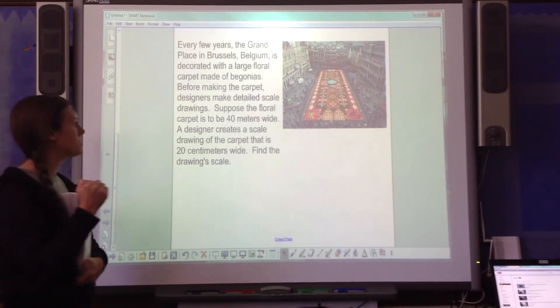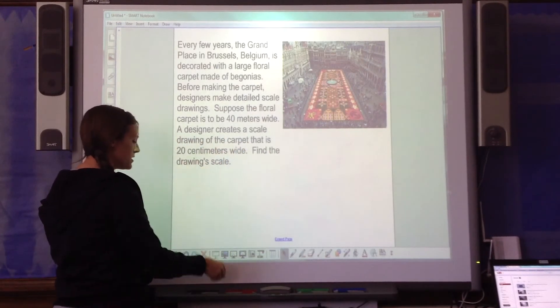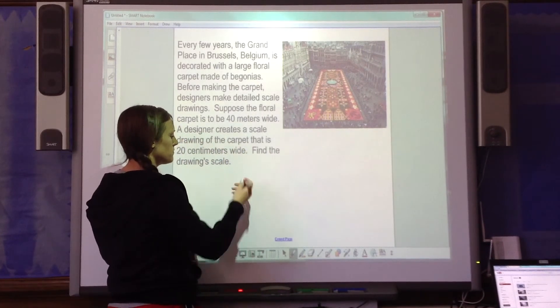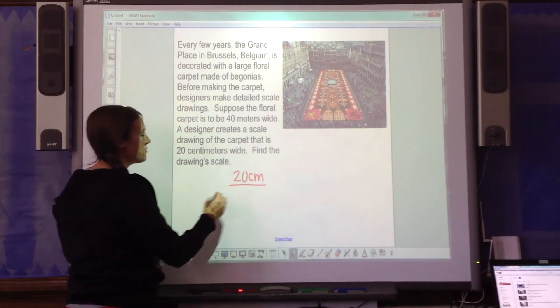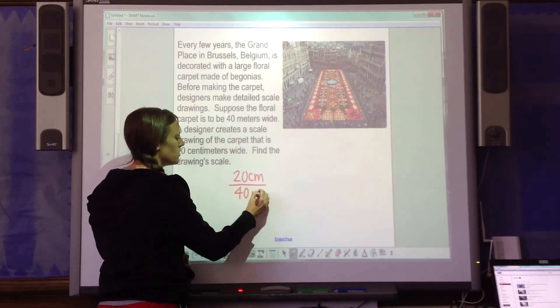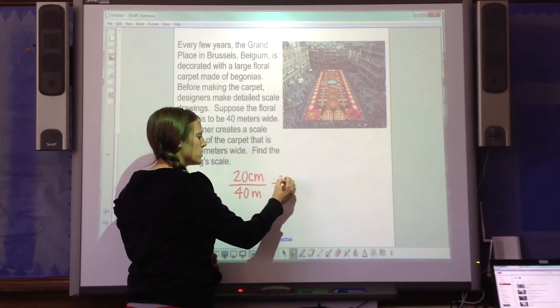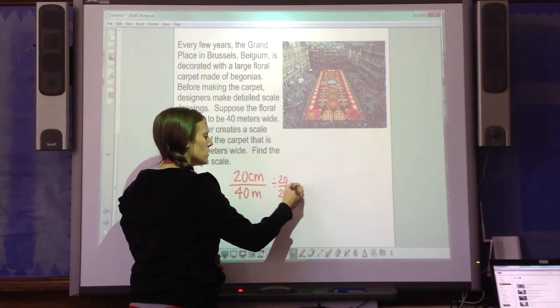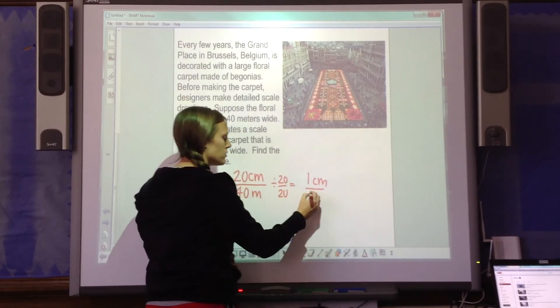So model over original, it looks like the model is 20 centimeters. And the original is 40 meters. Now remember, we want that numerator to be 1, so I'm going to divide it by 20. So I get 1 centimeter to every 2 meters.